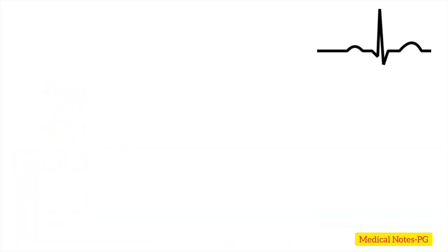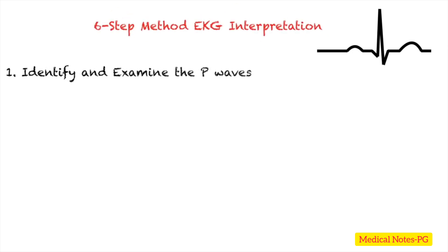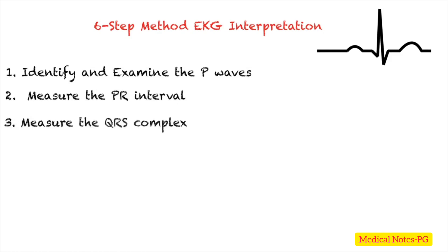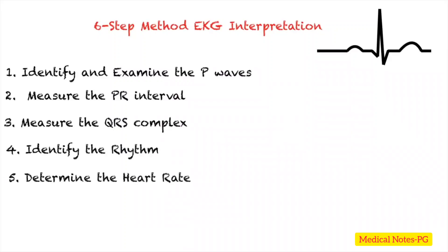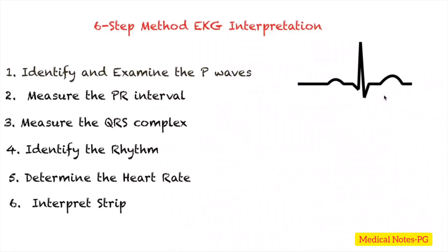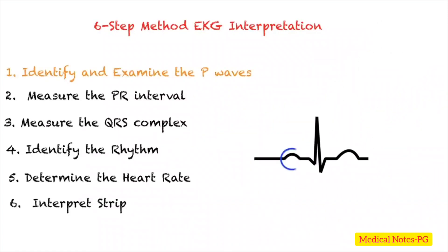Here is the six-step EKG interpretation: first, identify and examine the P waves; second, measure the PR interval; third, measure the QRS complex; fourth, identify the rhythm; fifth, determine the heart rate; and sixth, interpret your strip. Starting with step one: a normal P wave should be present and upright.